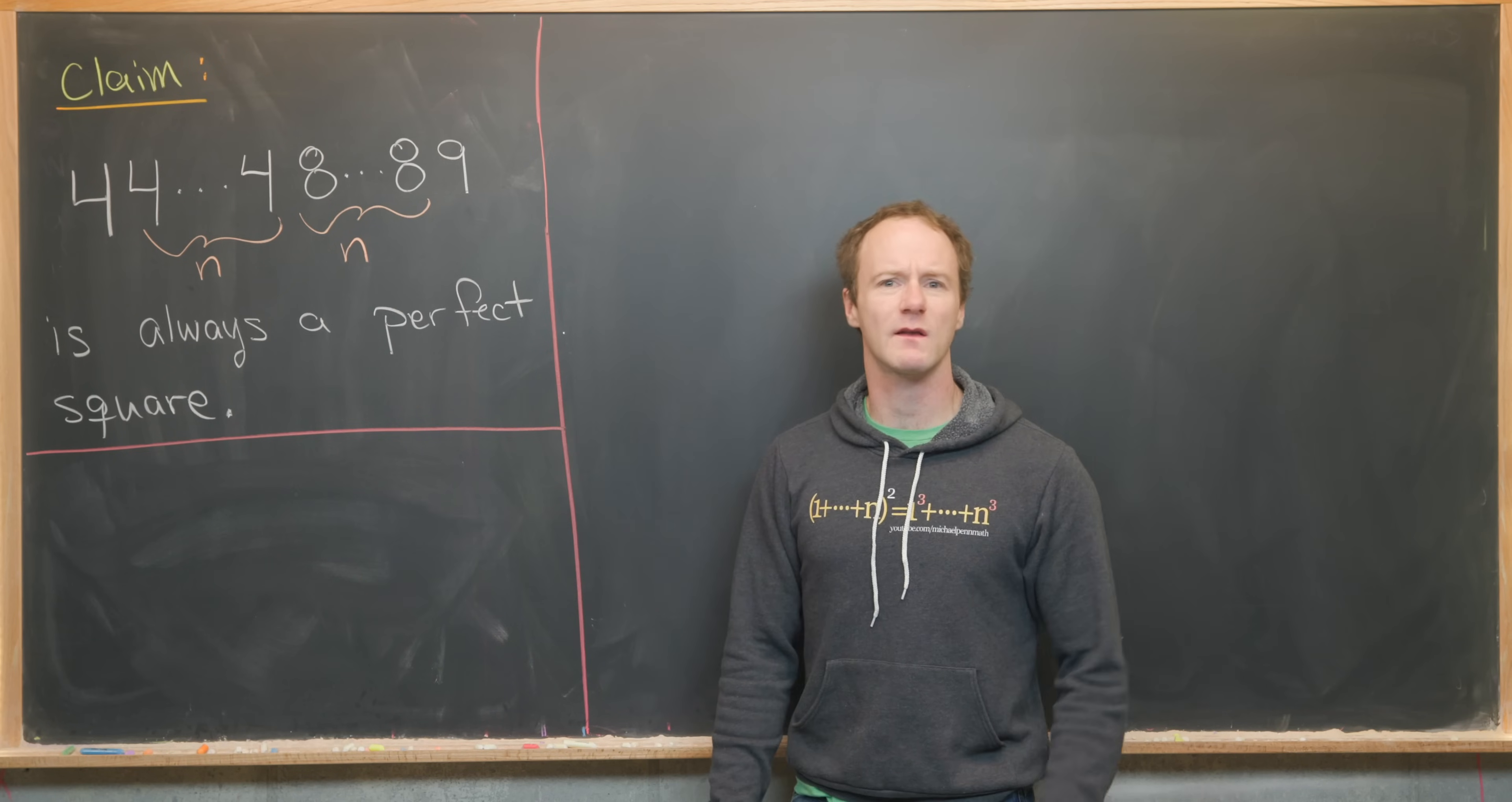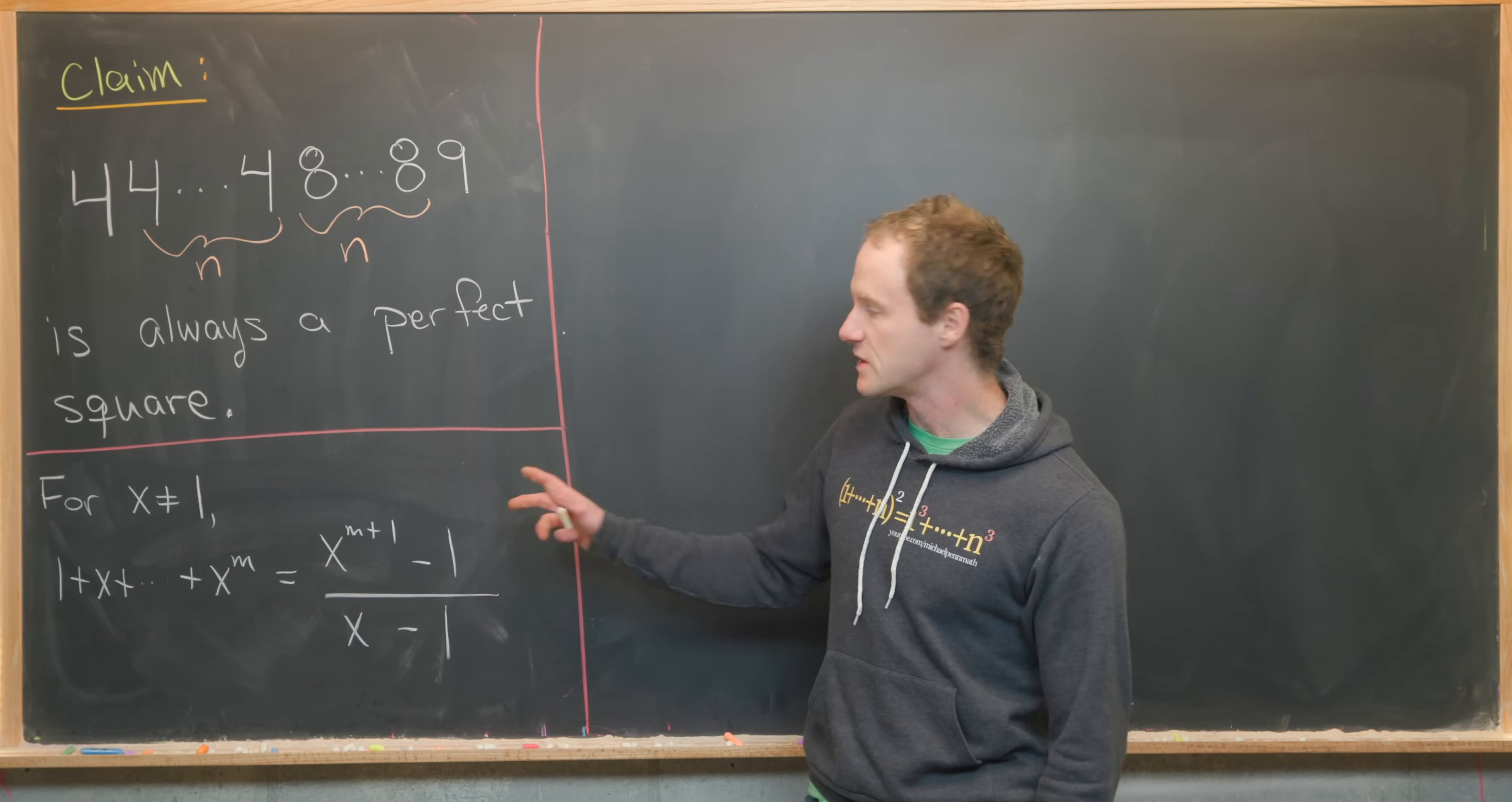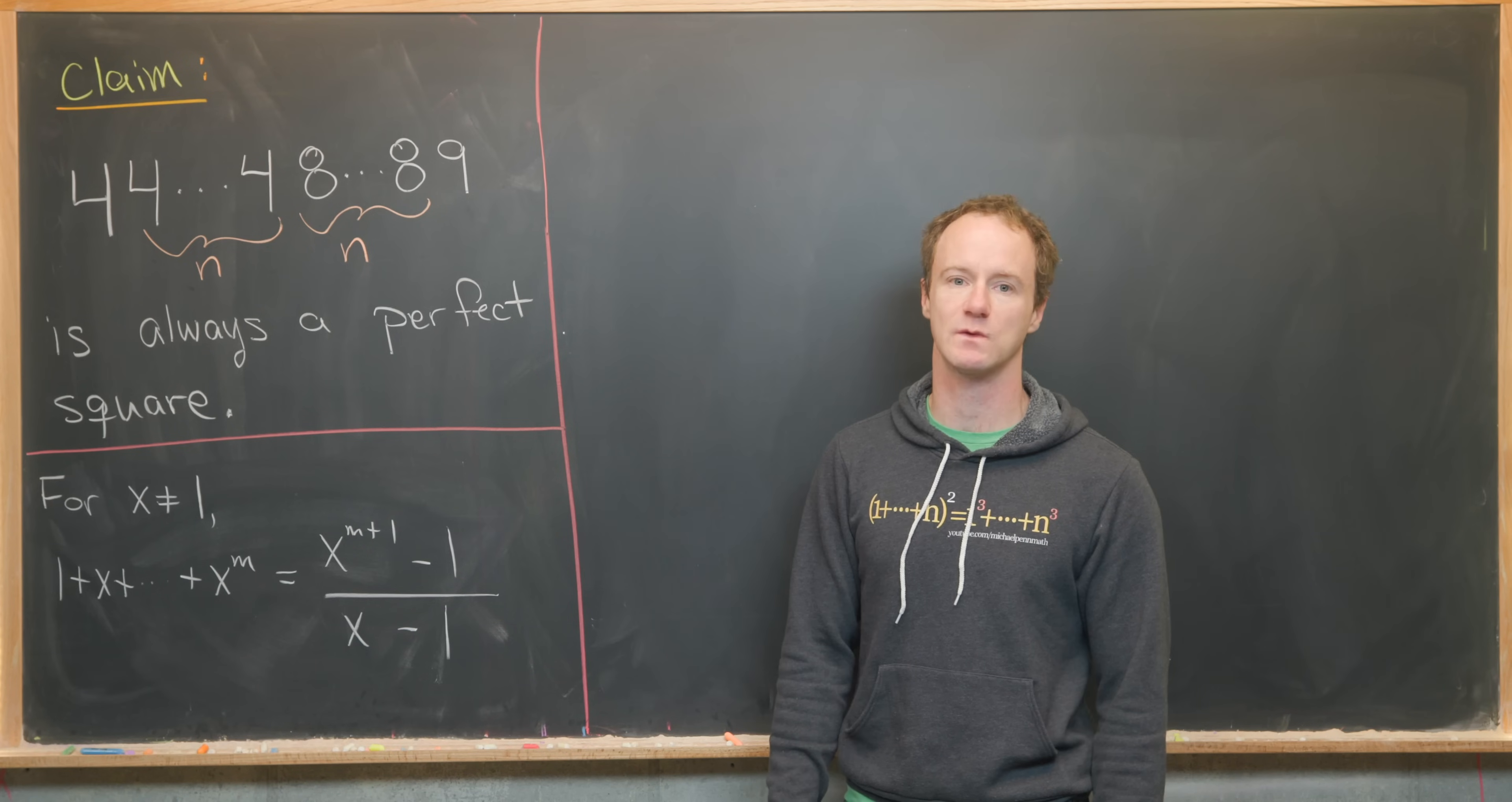Okay, we're going to need one fairly simple tool in order to prove this claim, and that is the closed formula for a finite geometric series. So let's maybe get that on the board right now. All right, so the identity that we're going to use, like I said, is for a finite geometric series. So it says for x not equal to 1, the sum 1 plus x all the way up to x to the m is equal to x to the m plus 1 minus 1 over x minus 1.